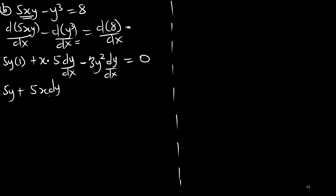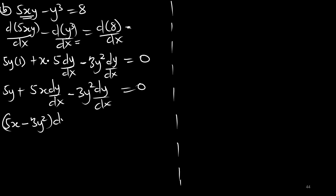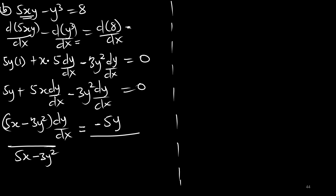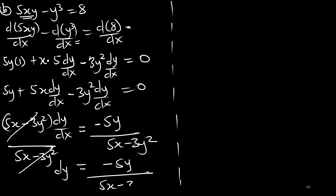So we have 5y plus 5x dy/dx minus 3y squared dy/dx equals zero. Grouping like terms, we factor out dy/dx from 5x minus 3y squared, which equals negative 5y. Dividing both sides, dy/dx equals negative 5y over 5x minus 3y squared. That is the final answer for part B.